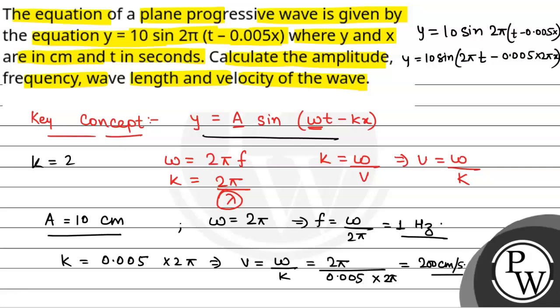Also, we have k that is equal to 2π/λ. And k's value we have is 2π × 0.005. So that will be equal to 2π/λ so we have λ that is